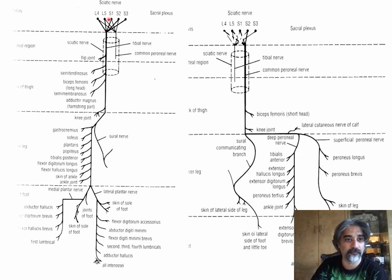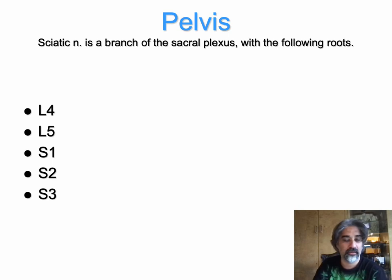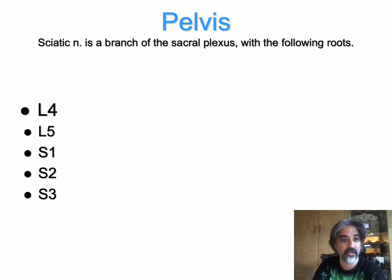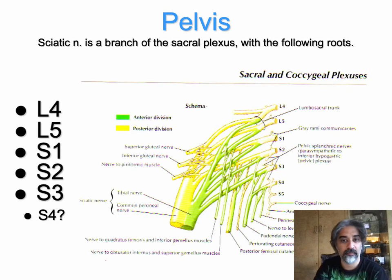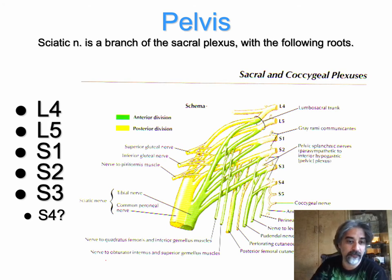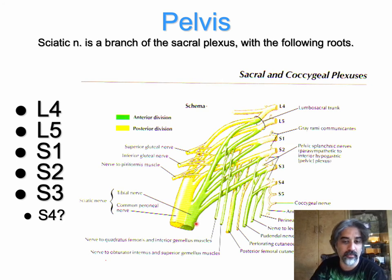Let's start in the pelvis. So in the pelvis, the sciatic nerve is a branch of the sacral plexus with L4, L5, S1, S2, S3, and maybe some S4. And as you can see here, it is the posterior divisions that make up the common peroneal portion, and the anterior divisions which make up the tibial portion.